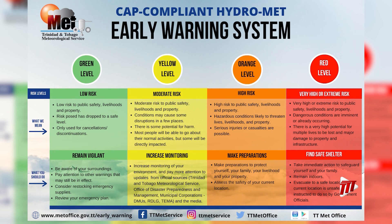When you go to orange level, it means you have a very high or high risk to public safety, livelihoods, and property. Hazardous conditions may threaten lives, livelihoods, and properties. Serious injuries or casualties could occur. You should be making preparations to protect your life, property, and livelihood.